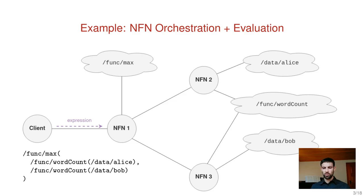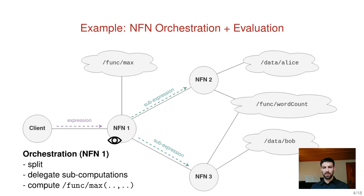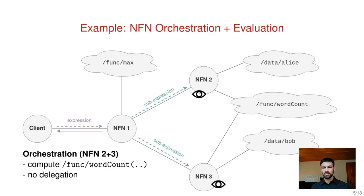In our example, NFN node 1 receives this interest and the first step is to do the orchestration. In this case, NFN1 decides to delegate the subcomputations — which is word count — and then later perform the application of the maximum function. So NFN1 takes the sub-expressions, encodes them, puts them into interest packets and sends them to the network. In this case it's NFN node 2 and 3 who receive these interests and again they first do orchestration.